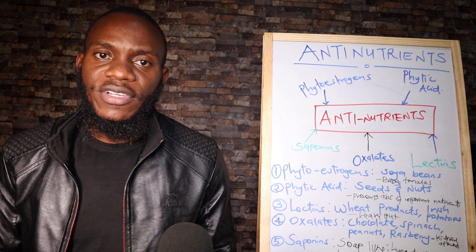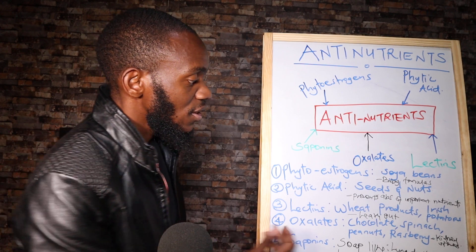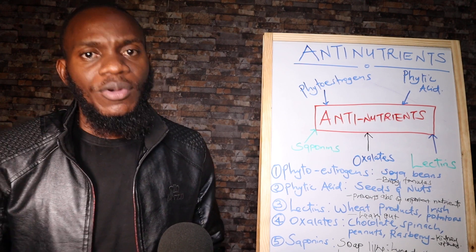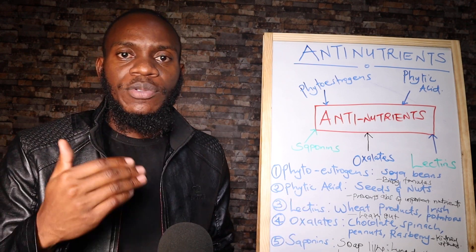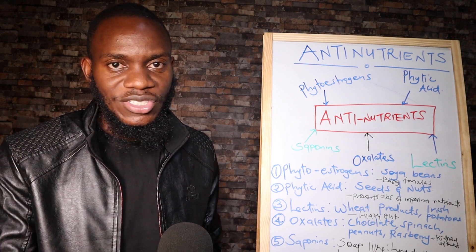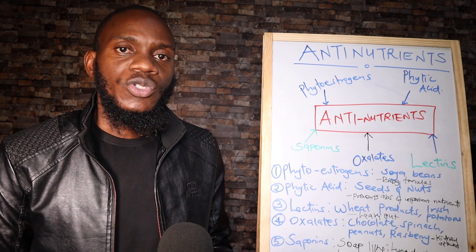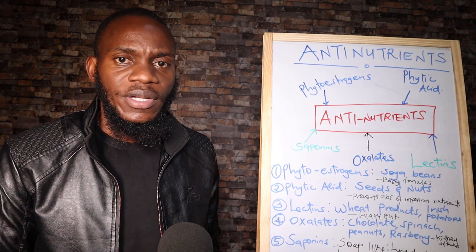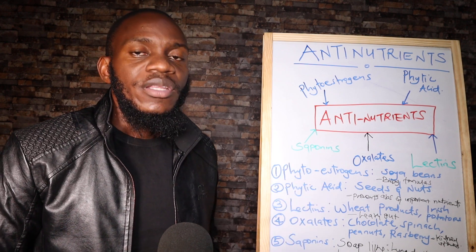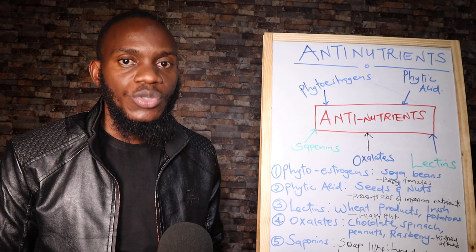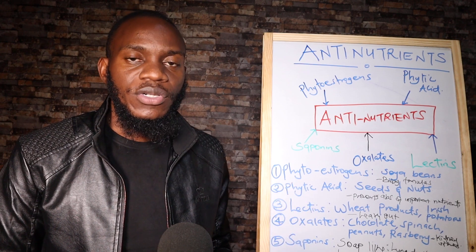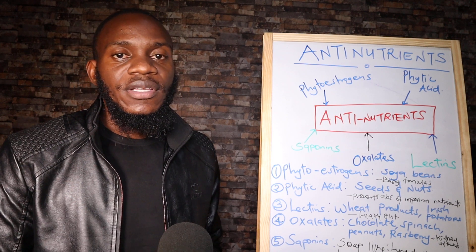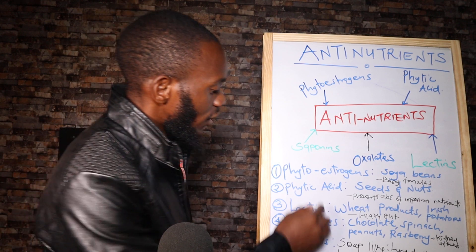Number two is phytic acid. Phytic acid is found in nuts, peanuts, and nutty seeds. The major problem of phytic acid is it blocks the absorption of zinc, magnesium, iron, and calcium. Blocking zinc means men will have a problem with erection — erectile dysfunction — and reproductive health. Blocking iron means for both genders there will be a problem with blood development, so anemia will ensue. Blocking calcium affects the development of bones and the musculoskeletal structure of a human being.